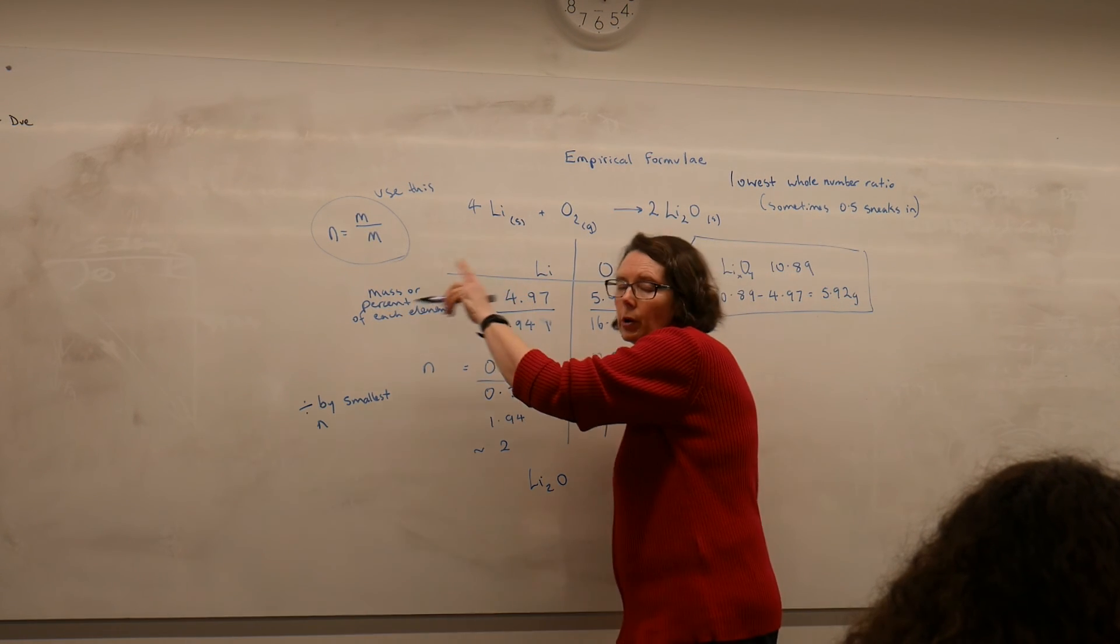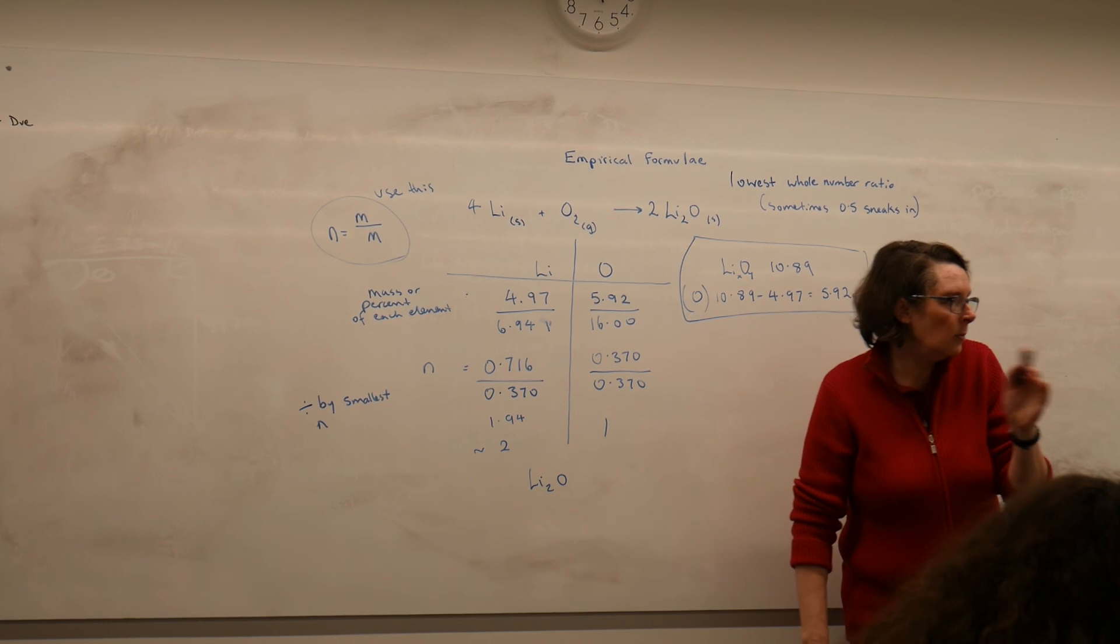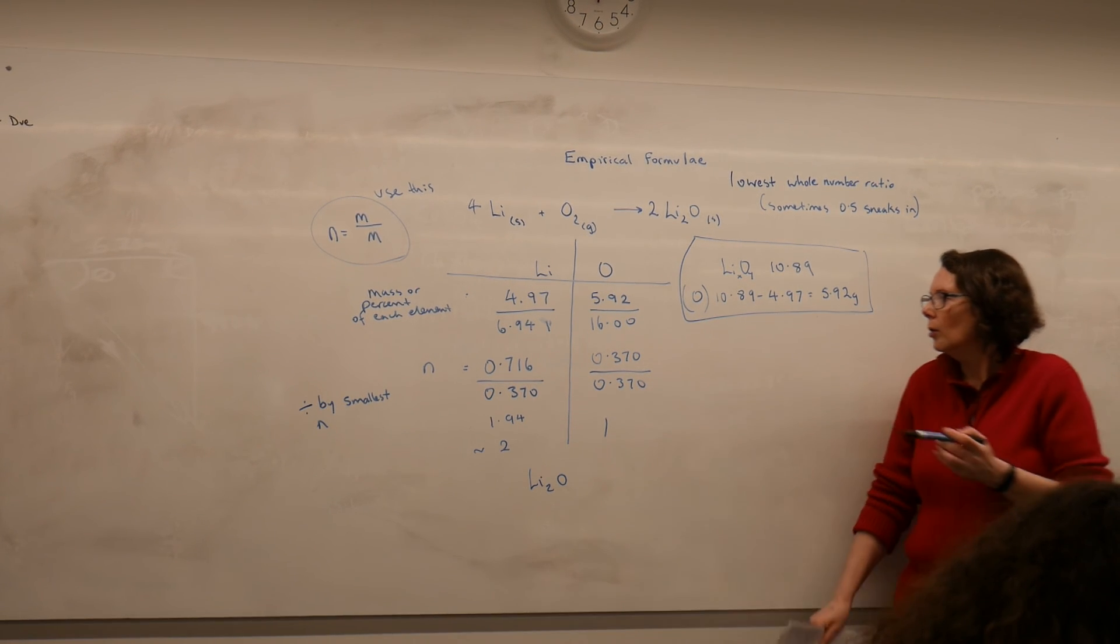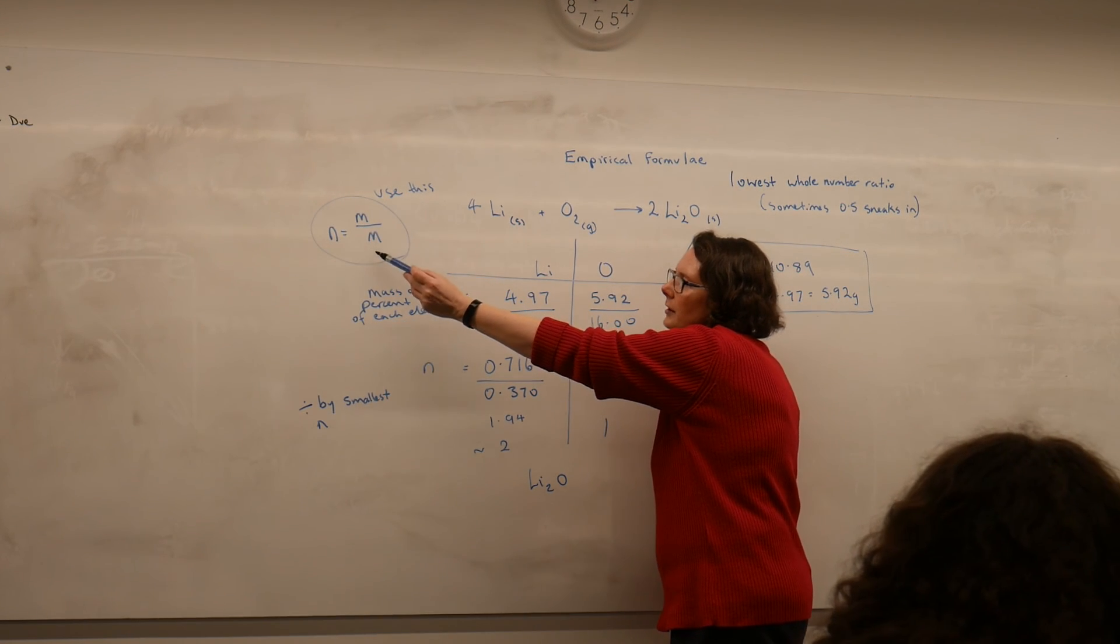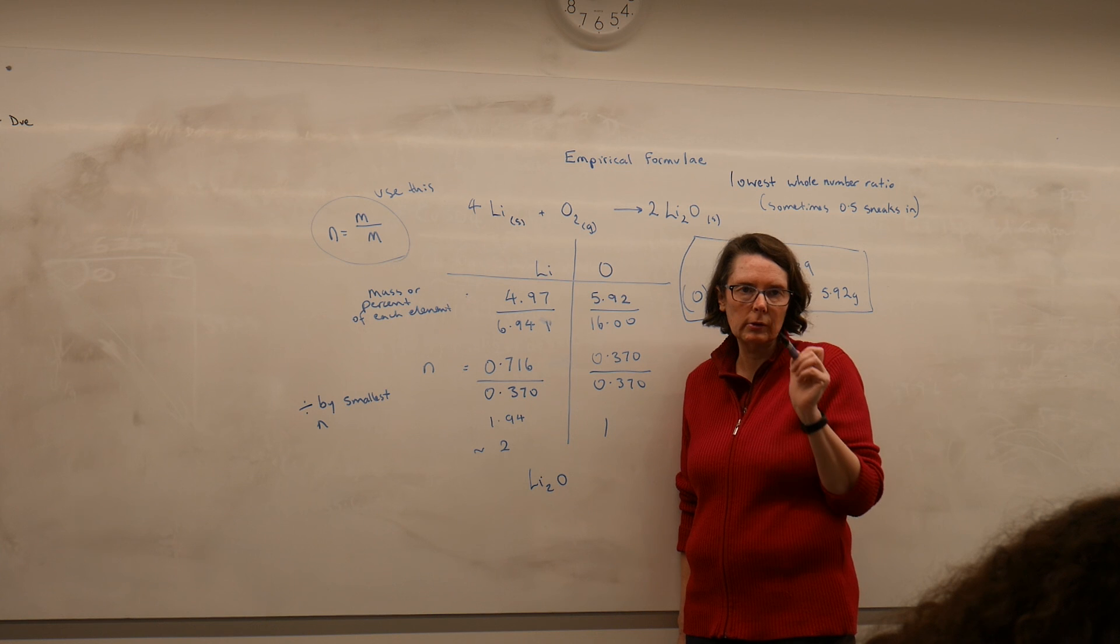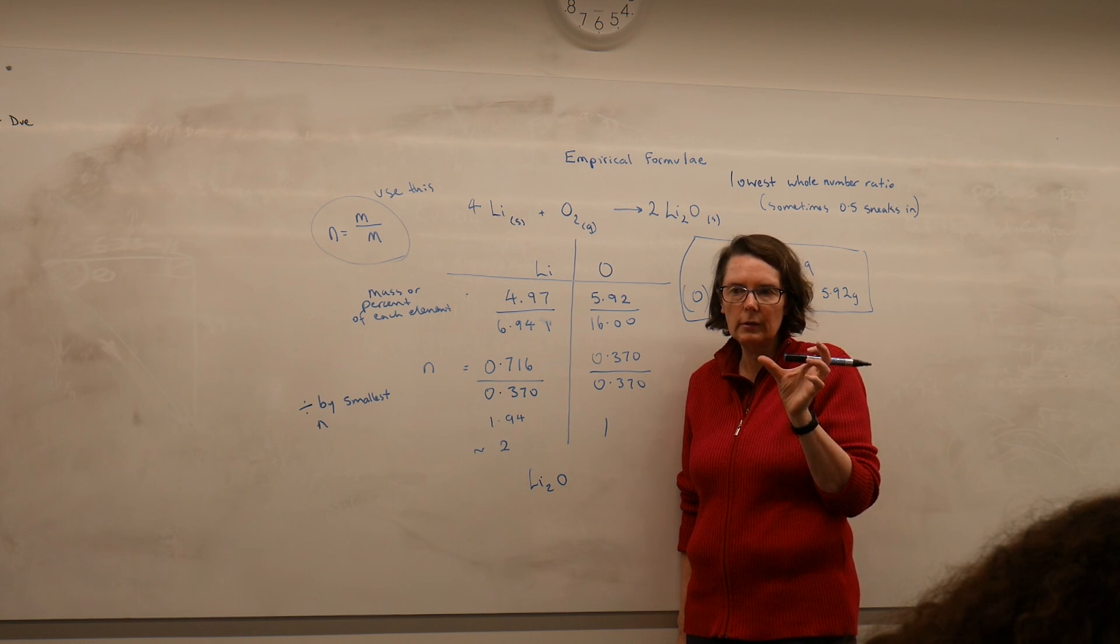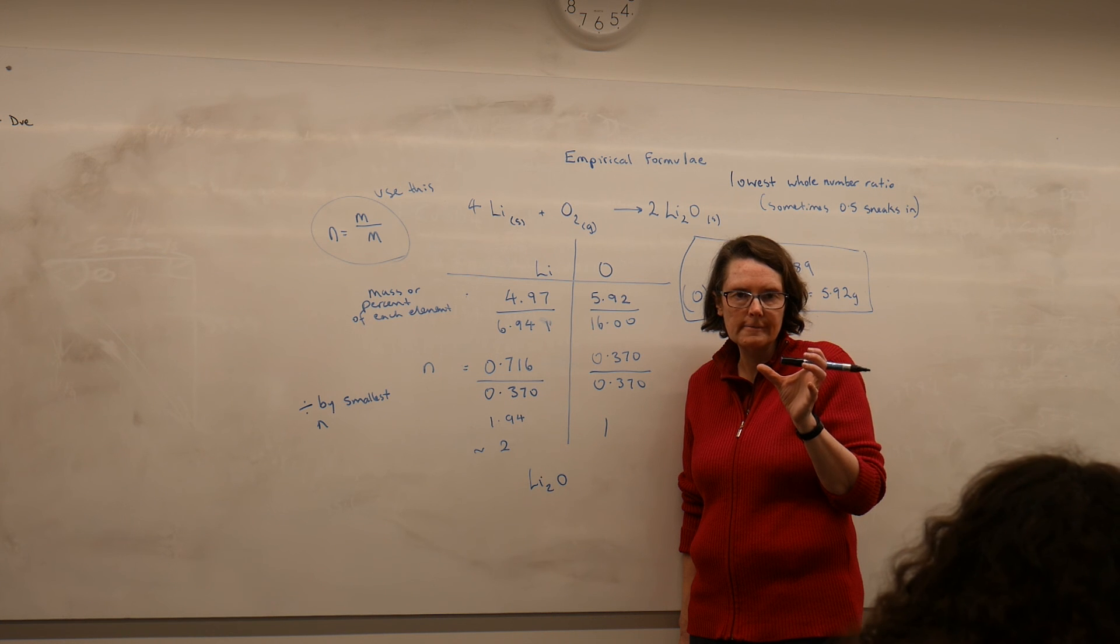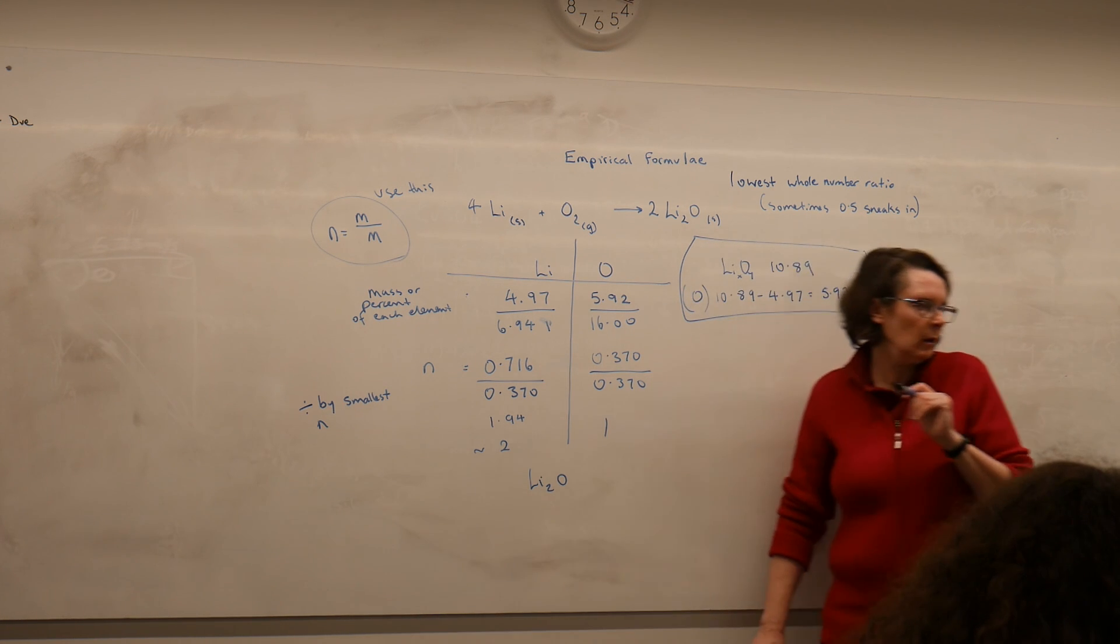Now you don't need to worry about what you start with. It could be a percent, it could be just the masses like this. All you need to remember is that you're finding the number of moles from whatever it is, the whole of what you're starting with. You're either 100% or the total mass of your compound.